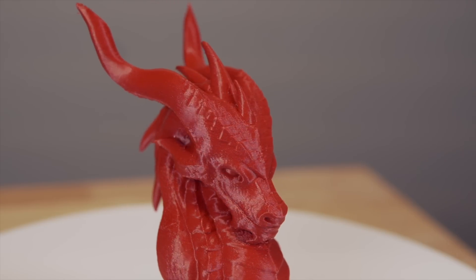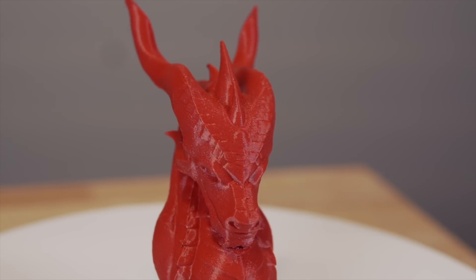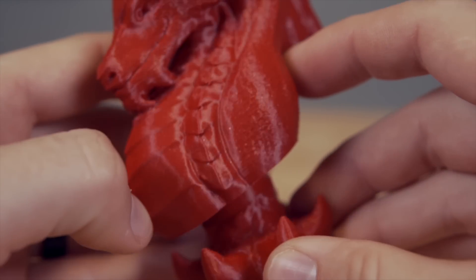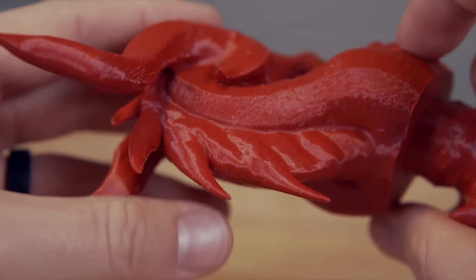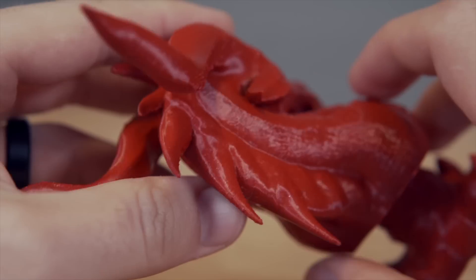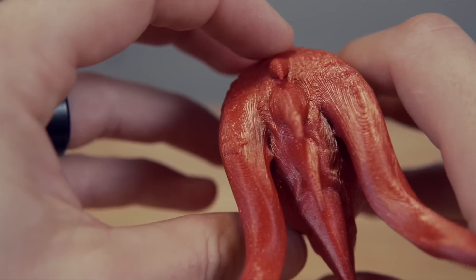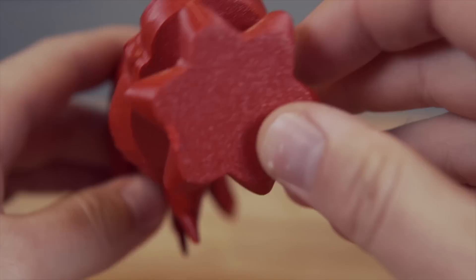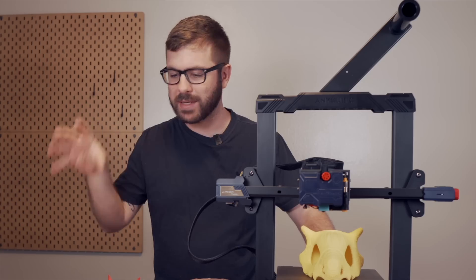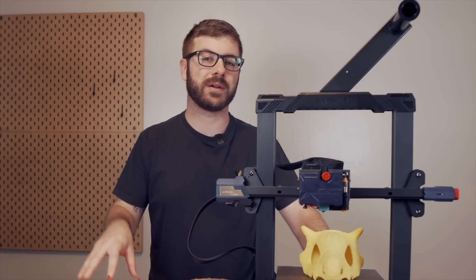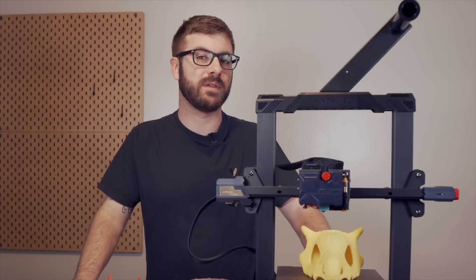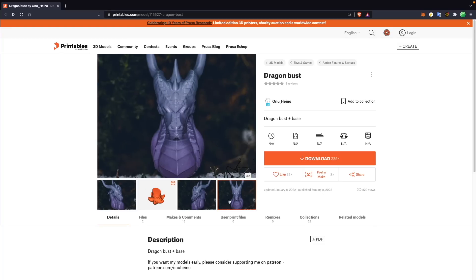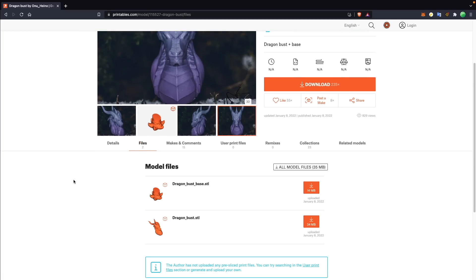I then switched over to some Jesse Blood Red PLA and printed out a dragon bust. This really is a testament to how far supports and support algorithms have evolved over the years. Due to the horns on this model, it required quite a bit of support material. And back in the day, printing this would have been an absolute nightmare. Using the Prusa Slicer snug supports, it still took some time to remove, but it did a fantastic job and supported all the areas that it needed without really leaving any blemishes on the finished part. This model from Onu is a very cool one and links to this and the rest of the models shown in this video will be linked in the description.